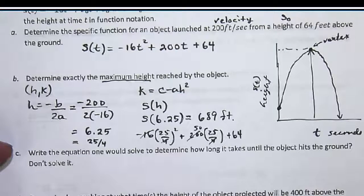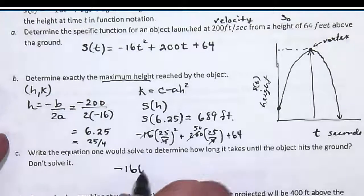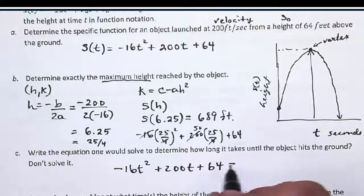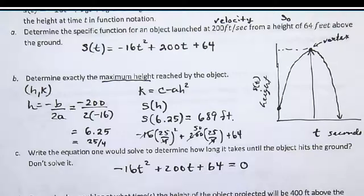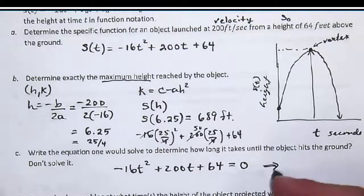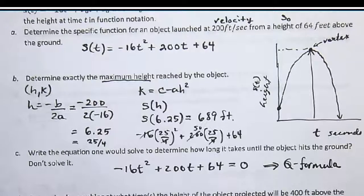The next question was, write the equation one would solve to determine how long it takes until the object hits the ground. Don't solve it though. I just want the equation. So the ground is how high? Zero. So the equation that one would solve is negative 16t² plus 200t plus 64 equals zero. Then you could find the t that gives you zero for the height. To actually solve that, you would probably use the quadratic formula. But you didn't have to solve it, you just had to write the equation.